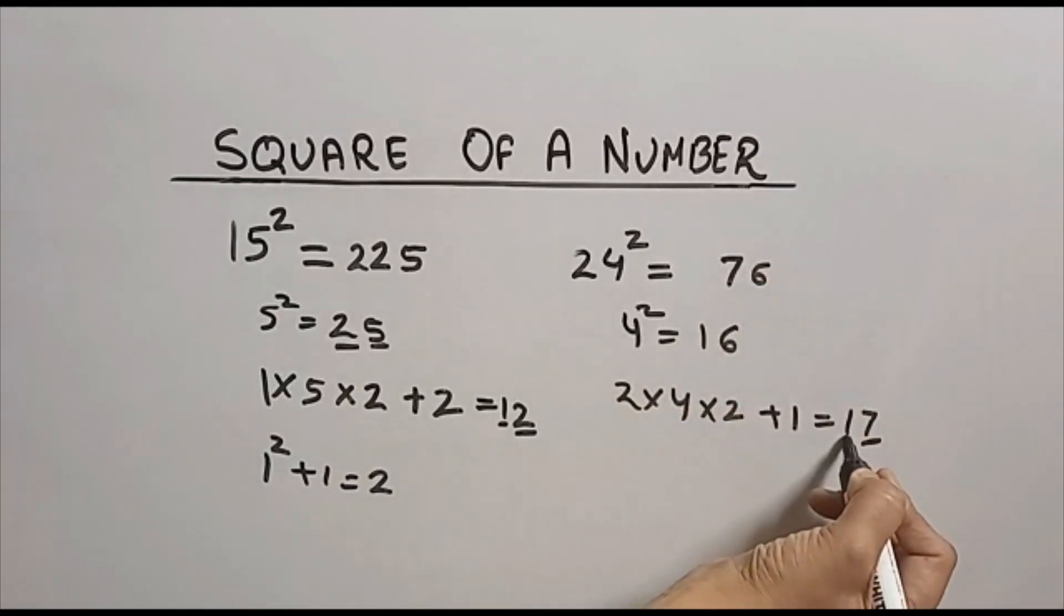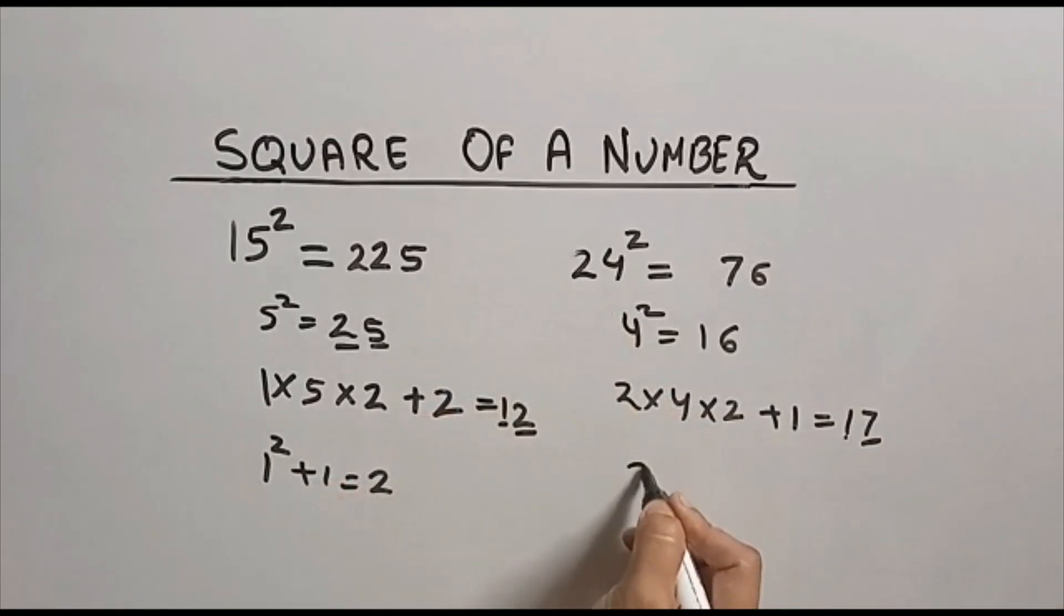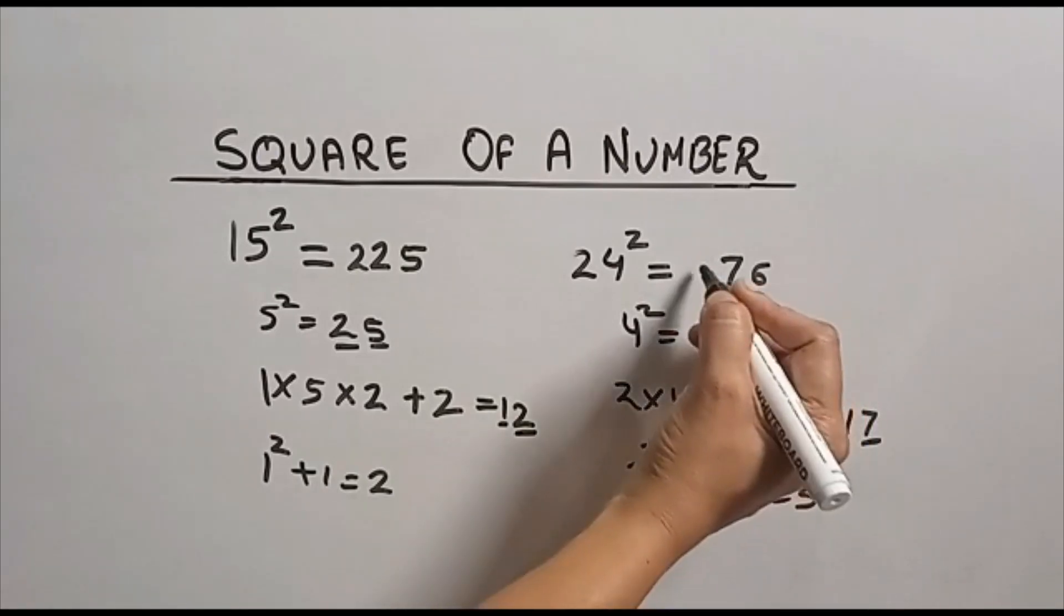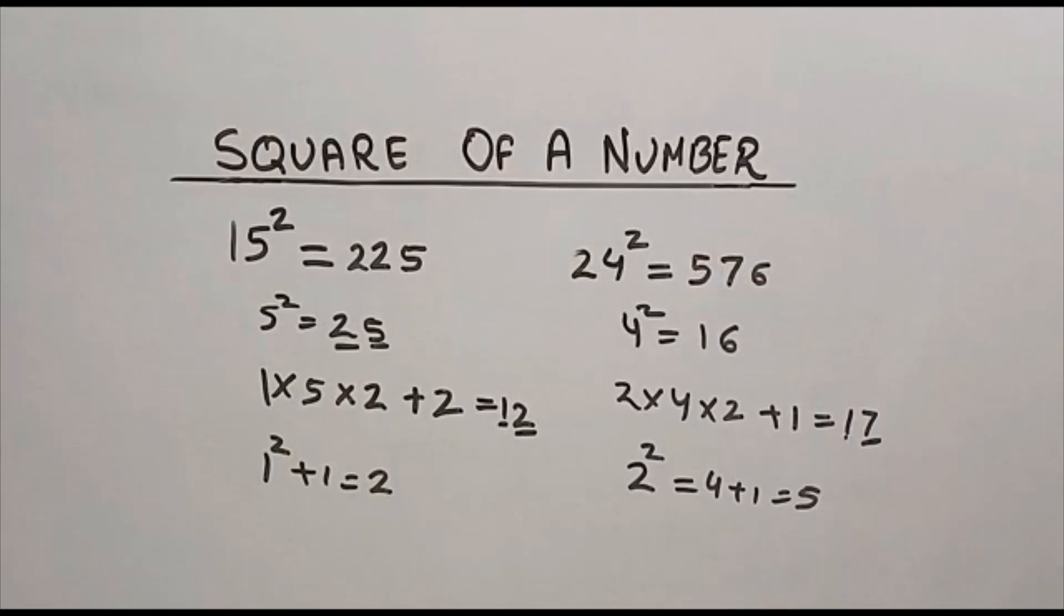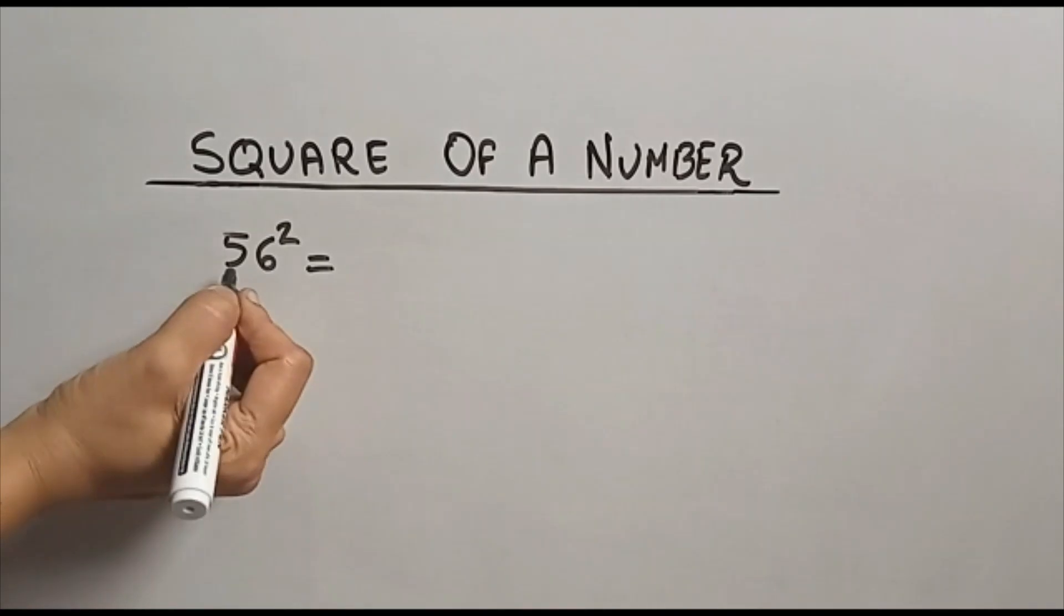This 7 I am writing here. Now this 1 I am going to add with the square of this tens place: square of 2 is 4 plus 1 which is 5. So this is the square of 24 which is 576, and square of 15 is 225.